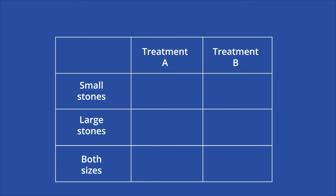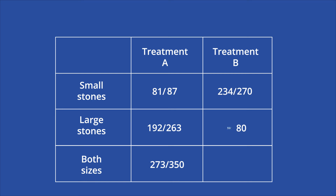This example reveals the underlying causes of Simpson's paradox. First, the sizes of the patient groups were different across the two treatments. Treatment A was given to 87 small stone patients and 263 large stone patients, while treatment B was given to 270 small stone patients and 80 large stone patients. That means treatment A relieved 81 out of 87 small stones and 192 out of 263 large stones for a total of 273 out of 350 overall cases. Treatment B relieved 234 out of 270 small stones and 55 out of 80 large stones for a total of 289 out of 350 overall cases. Although treatment A had higher success rates relative to the size of each subgroup, treatment B relieved more stones in the total patient population.